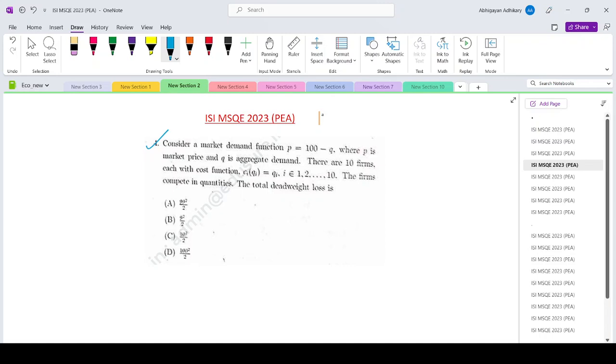The firms compete in quantities, so the total deadweight loss is how much. There are 10 firms and firms compete in quantities, so this gives you an idea that we are basically talking about the Cournot setup.